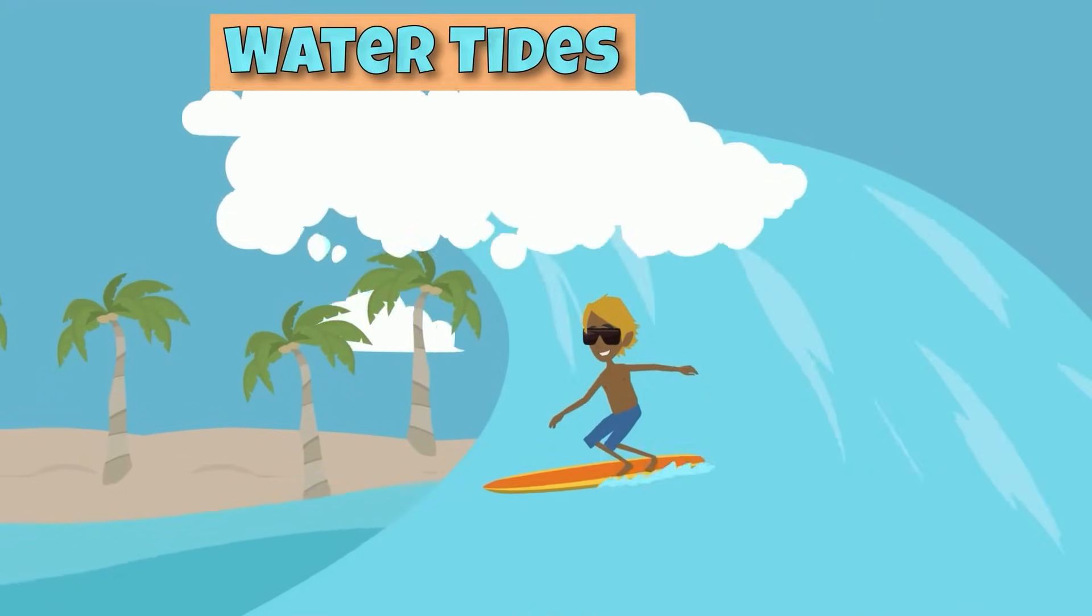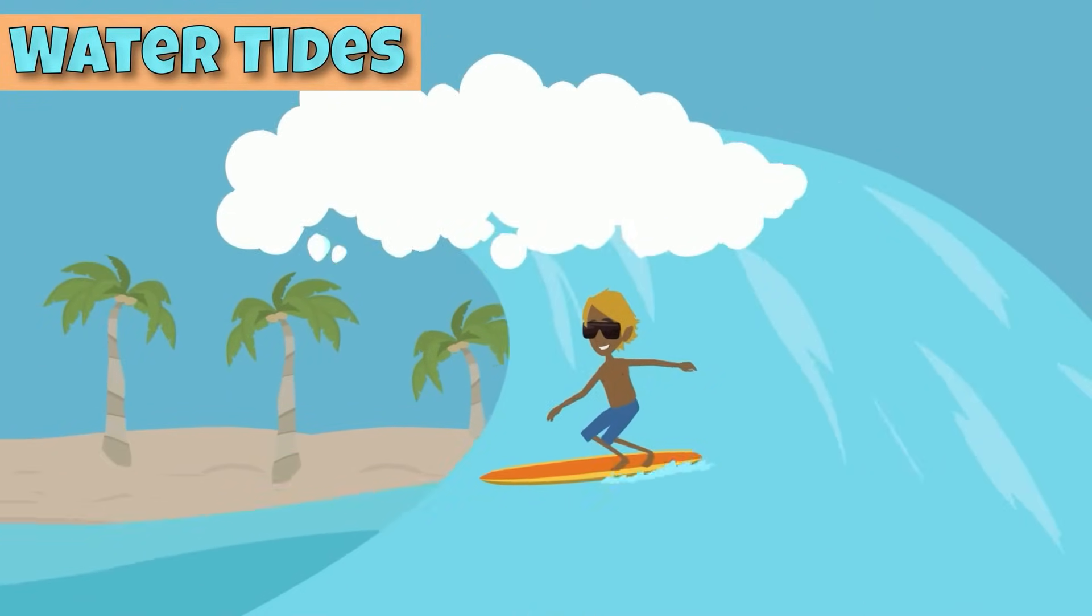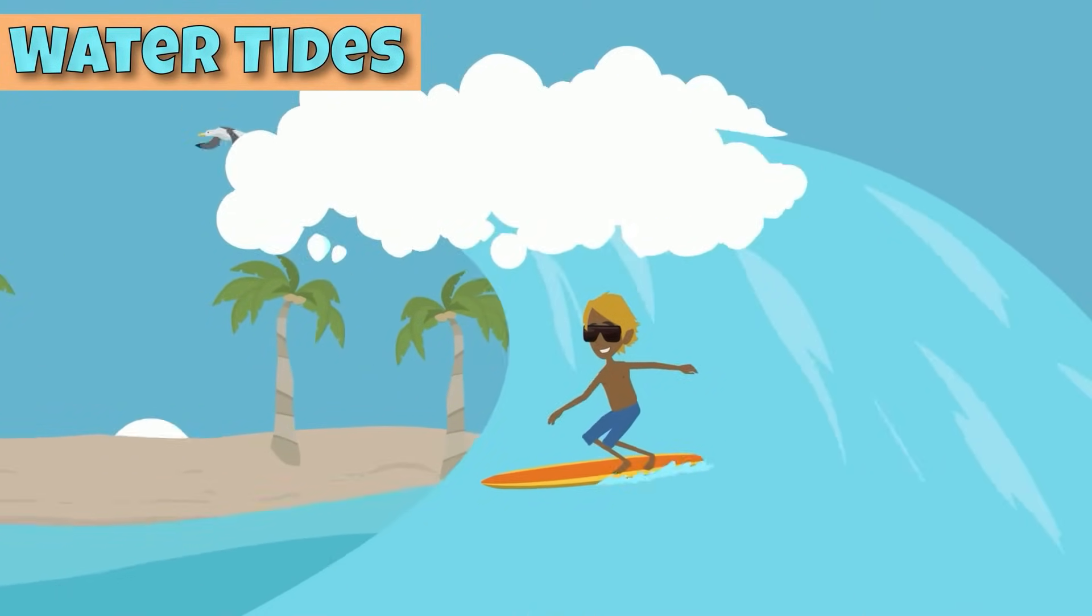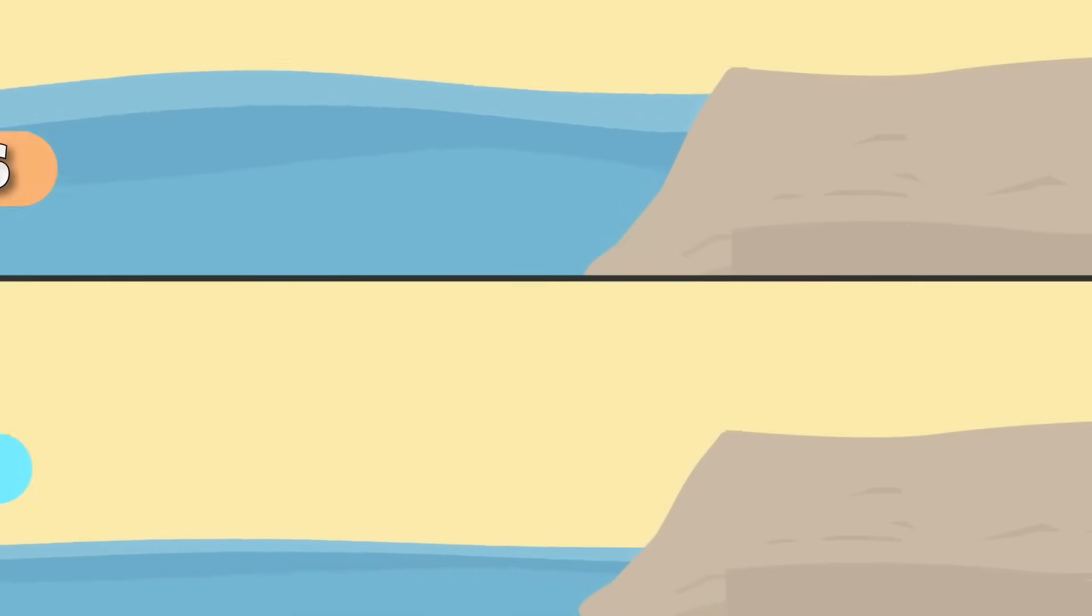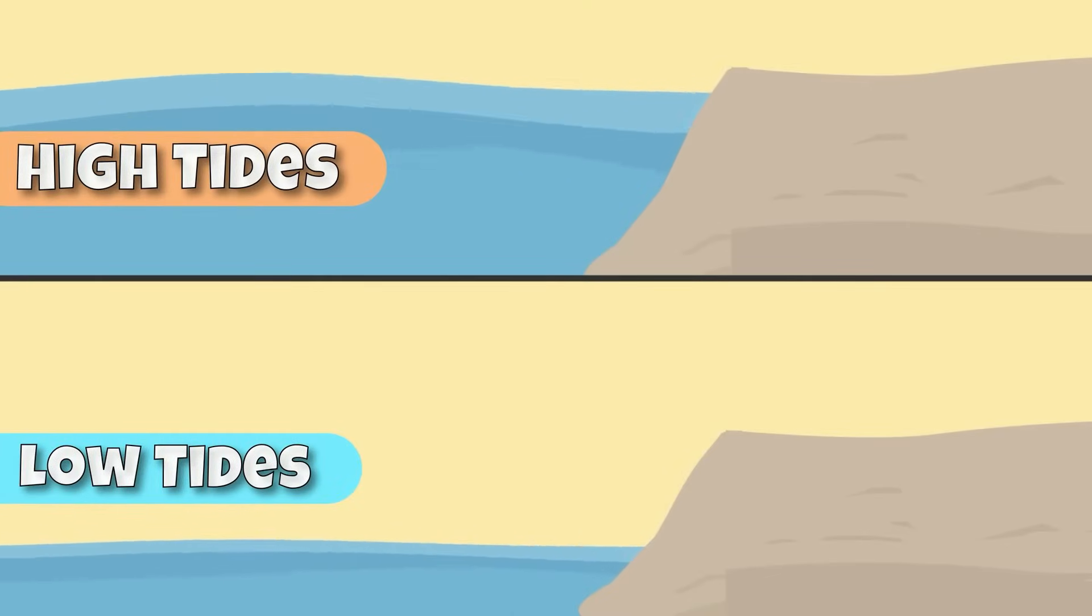When you go to the beach, you probably notice that water is constantly moving in the ocean. This is because high and low tides are caused by the gravitational force of the moon acting on the Earth.